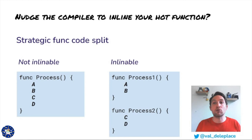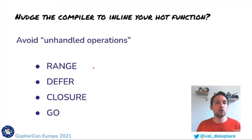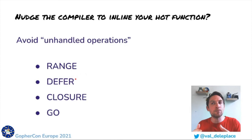Note that splitting will make your code less convenient because each call site will now need to call two functions instead of one. Some common operations simply prevent inlining, and it is sometimes possible to refactor the code to avoid them. Range loops are excluded; however, a range loop over a slice can be trivially rewritten into a simple for loop. Defer statements can most often be moved and replicated at each exit point of the function.